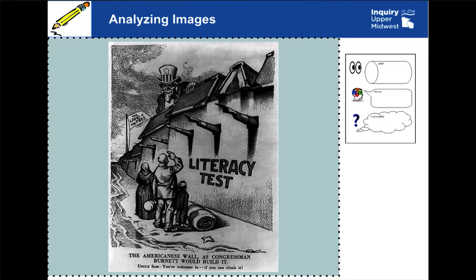Political cartoons can be a little more complicated to analyze, but the Observe, Think, Wonder tool can be a great way to get that introductory look at what is in a political cartoon. So what do you observe? What do you think? And what do you wonder? You might observe that there are three people standing, looking up. You might observe that there's a wall with the words 'literacy test' and books on top. You might think that those people might be immigrants. You might think that's Uncle Sam at the top. And you might wonder, where are these people from, and what is the literacy test? There are a lot of great questions that can come from using the Observe, Think, Wonder tool and it can bring great conversation into your classroom.